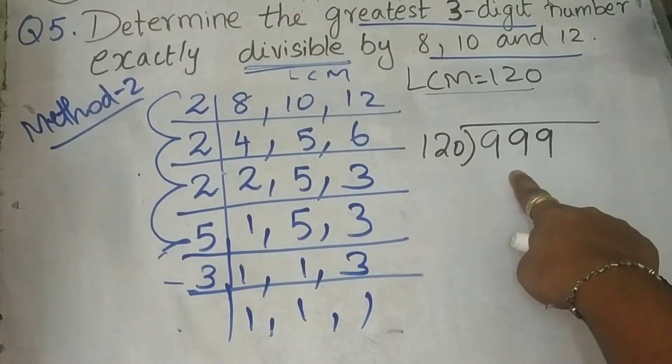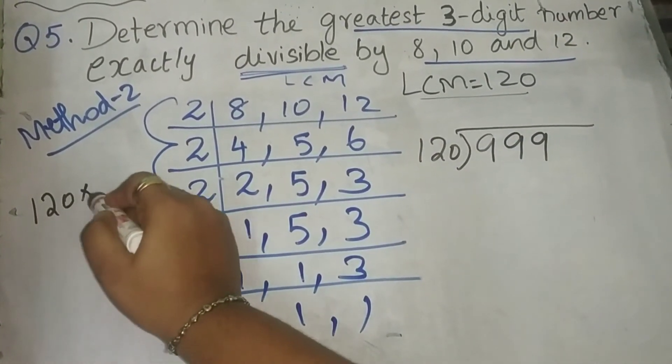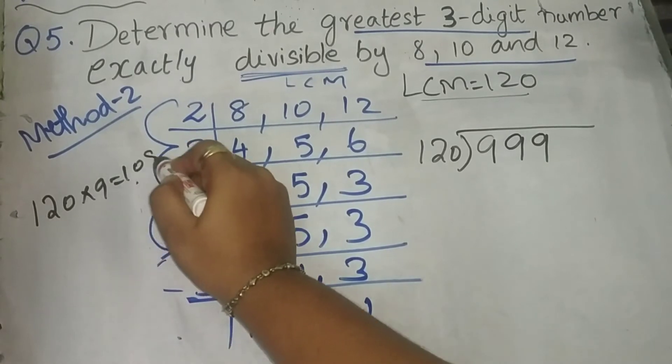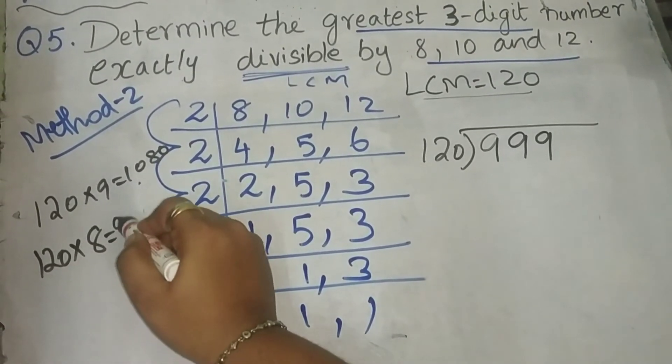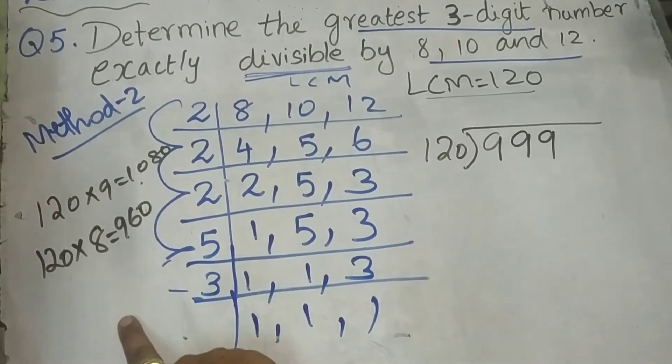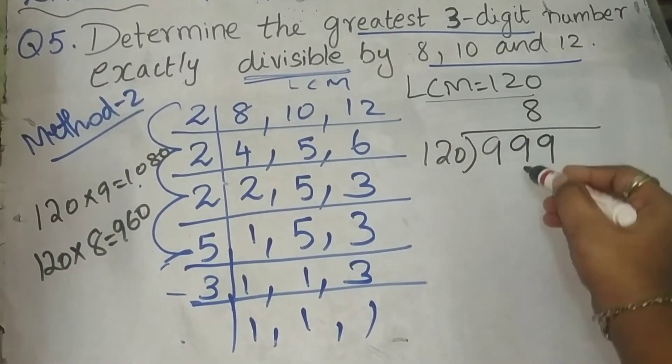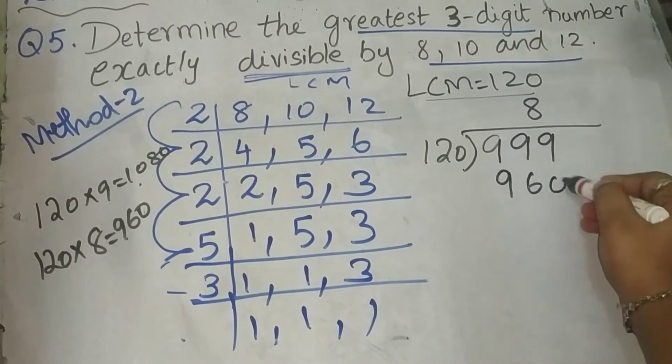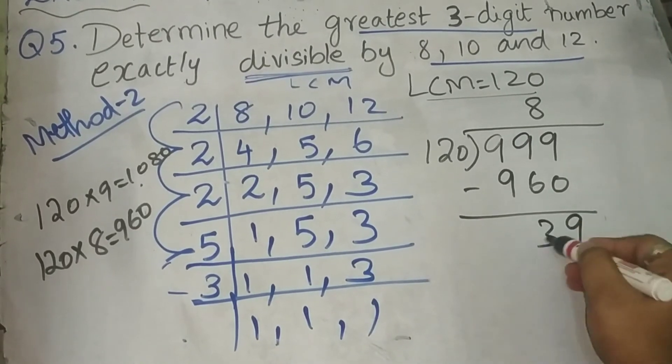So, 120 divided by 999. Just now, we have seen 9 times are, we are getting 1080. And 8 times are, we are getting 960. Right? So, how many times it is divisible in 120? 8 times 960. Subtract it. 9 minus 0, 9. 9 minus 6, 39.